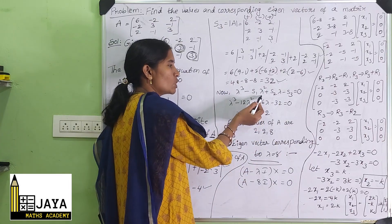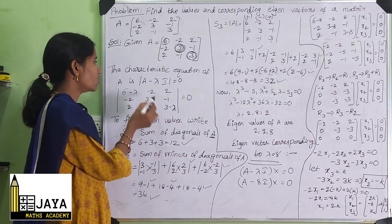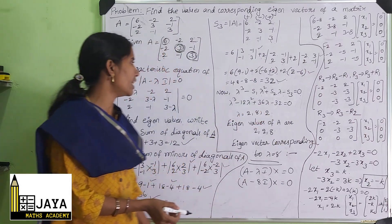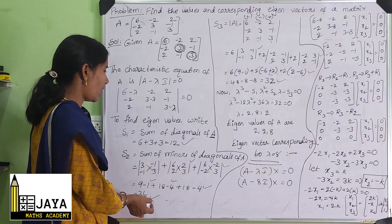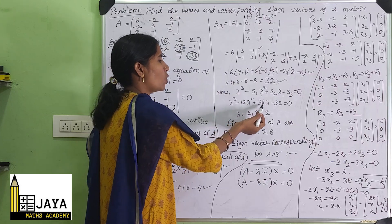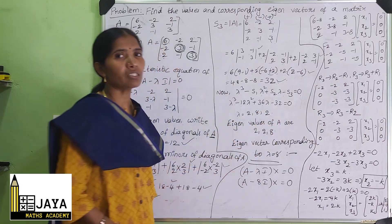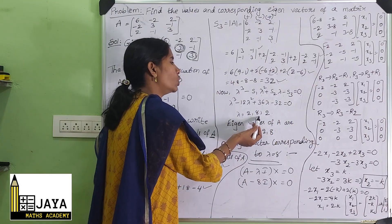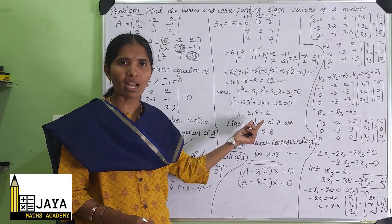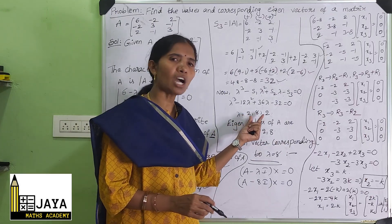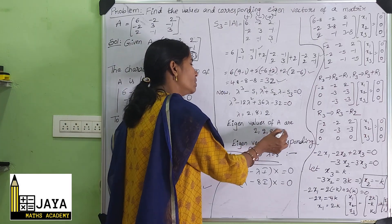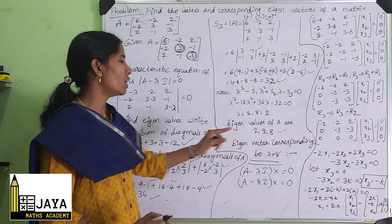The characteristic equation is λ³ - S1·λ² + S2·λ - S3 = 0. Substituting S1=12, S2=36, S3=32: λ³ - 12λ² + 36λ - 32 = 0. Solving this gives eigenvalues λ = 2 and λ = 8 (λ = 2 is a repeated root). So the eigenvalues are 2 and 8.